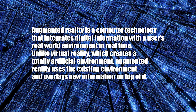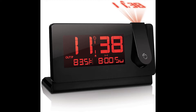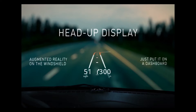The simplest form of augmented reality is a passive overlay, where the information being displayed has little to nothing to do with the reality it's overlaying. A clock that projects the time on your ceiling, or a car's heads-up display that shows you your speed and direction, would be examples of passive augmented reality.